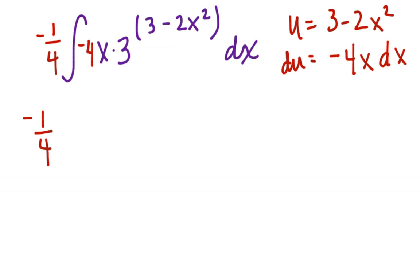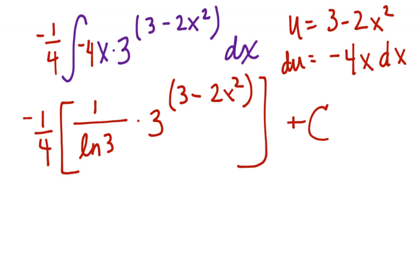Negative 1 fourth times 1 over ln 3 times a to the u. Well, a is 3, the u is the quantity 3 minus 2x squared, plus a constant. So it's kind of messy, but we can clean it up a little bit. Negative 3 to the 3 minus 2x squared, all over 4 ln 3, plus a constant.